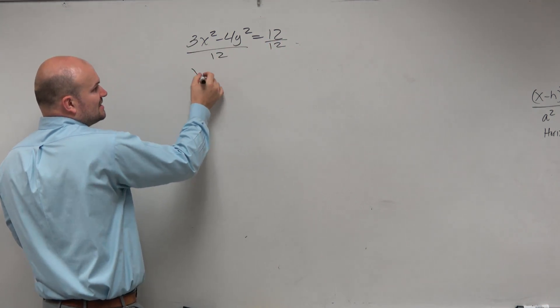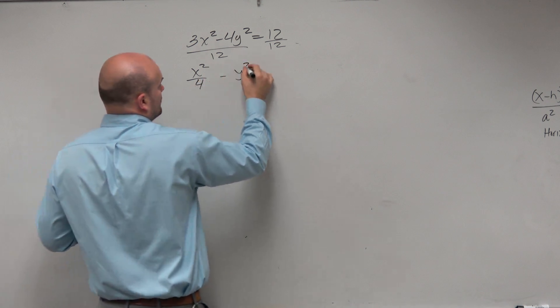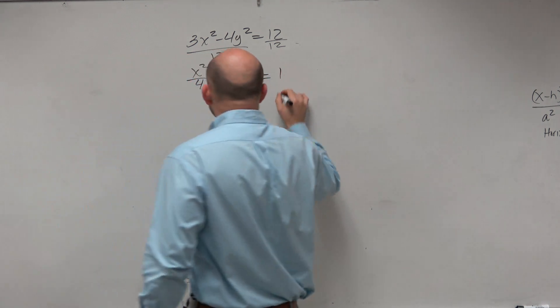When I divide 12 on both sides, I get x squared over 4 minus y squared over 3 equals 1.